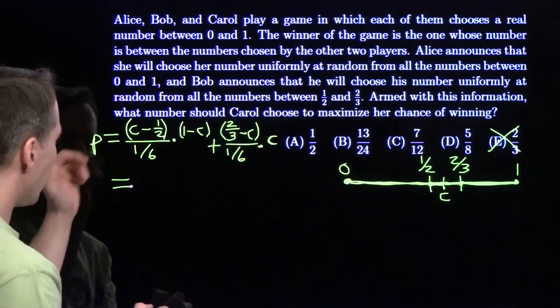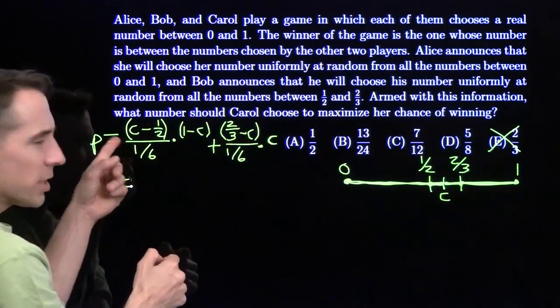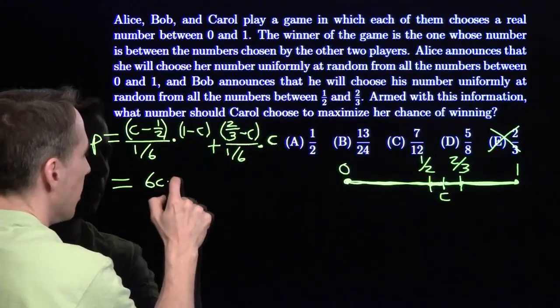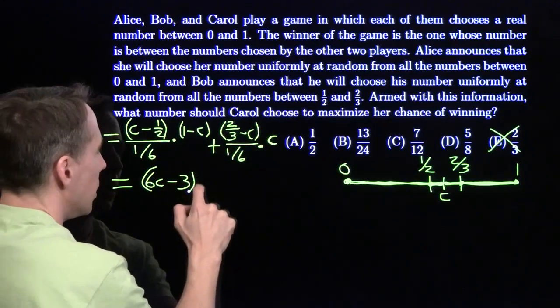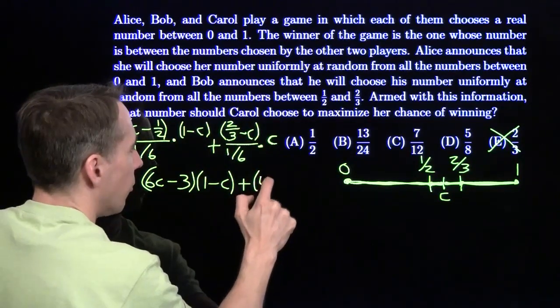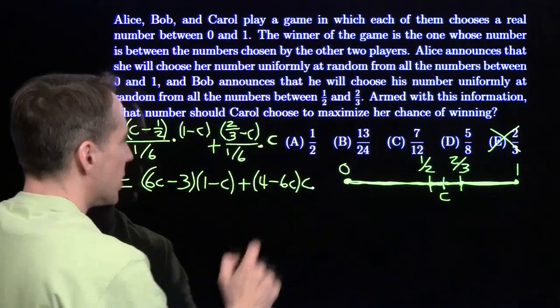Now we're just doing a little algebra. Divide by 1/6 by multiplying this expression by 6. We get (6C - 3) times (1 - C). Same thing here, we get (4 - 6C) times C.